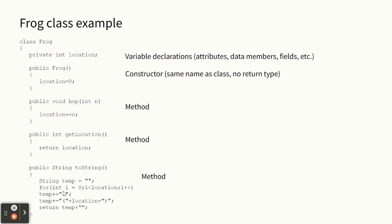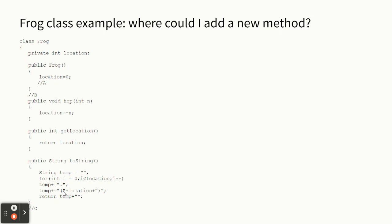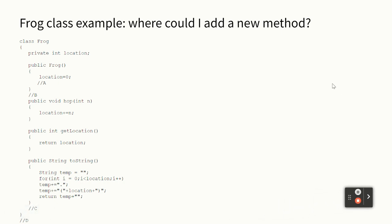So the top ones are variable declarations - attributes, data members, fields - they're all called those things, or just instance variables. Then the constructor. And then we have three methods. So the Frog has a little bit of everything in the Frog class. If I wanted to add a new method, I gave you three places - would I add it at A, B, or C? Or all of the above? Let's get this out of the way - or D. So I give you four choices. I want you as an individual to think to yourself: where could Mr. Hayes add another method to the Frog class?